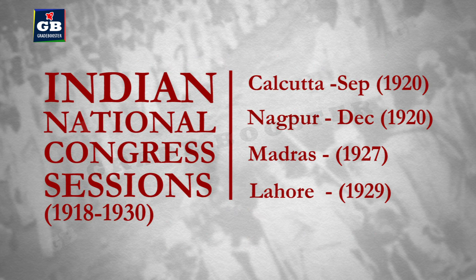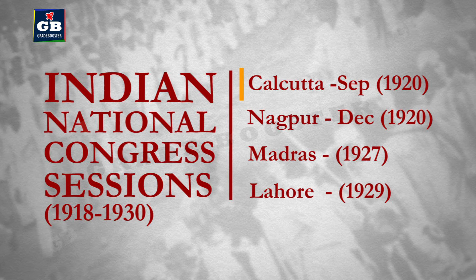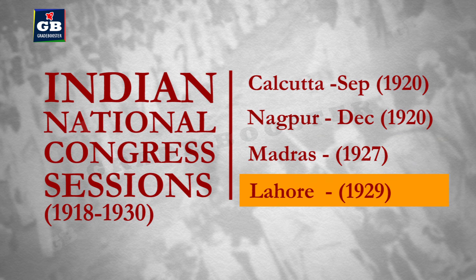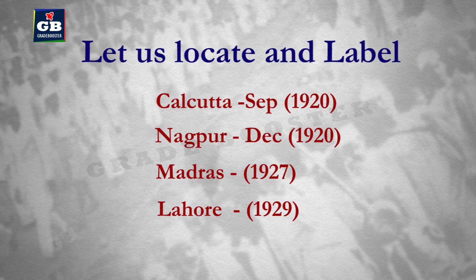The four Indian National Congress sessions include: the session at Calcutta in September 1920, the session at Nagpur in December 1920, the session at Madras in 1927, and the session at Lahore in 1929. Now let us locate and label them on an outline political map of India.